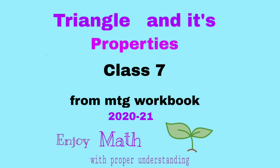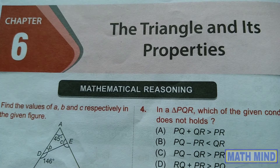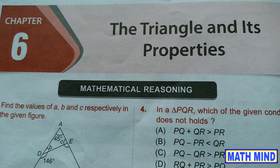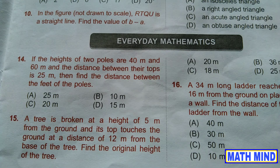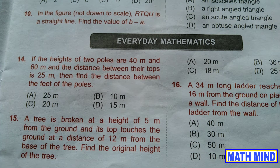International Mathematics Olympiad, Class 7, Chapter 6: The Triangle and Its Properties. Mathematical reasoning contains 13 questions and is in Part 1. The link of Part 1 is given in the description box. This is Part 2, which contains Everyday Mathematics and Achievers section.